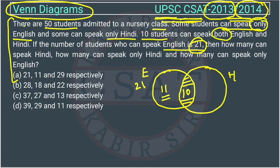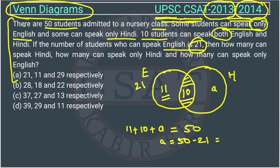The total number of students is 50. We have 11 in only English and 10 in the intersection. Let's call the only-Hindi region A. So 11 plus 10 plus A equals 50. Therefore A equals 50 minus 21, which is 29. The Hindi circle total is 29 plus 10, which equals 39.